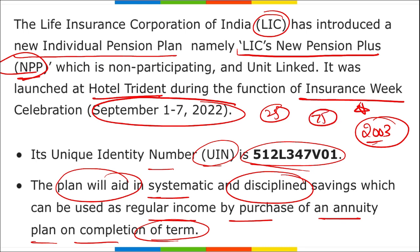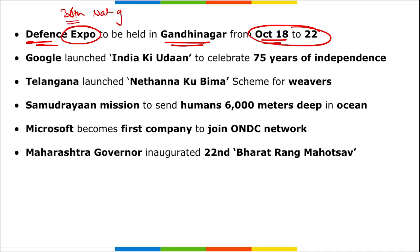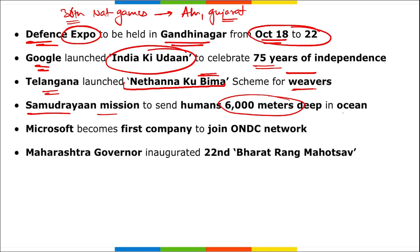Defence Expo will be held in Gandhinagar, Gujarat from 18th to 22nd October. The 36th National Games will be held in Ahmedabad, Gujarat. Google launched 'India Ki Udaan' to celebrate 75 years of independence. Telangana launched the 'Nethanna Ku Bima' scheme for weavers. The Samudrayan Mission aims to send humans 6,000 meters deep in the ocean. Microsoft became the first company to join the ONDC network and will be developing a mobile application for it.